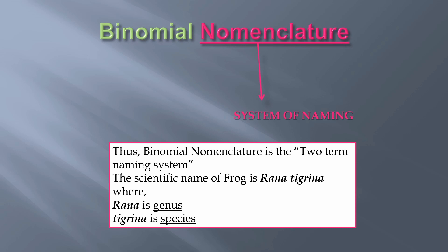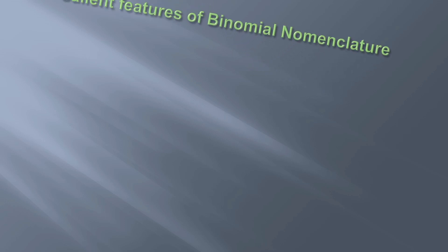For example, the scientific name of frog is Rana tigrina, where Rana is the genus and tigrina is the species. Now let's see the salient features of binomial nomenclature.